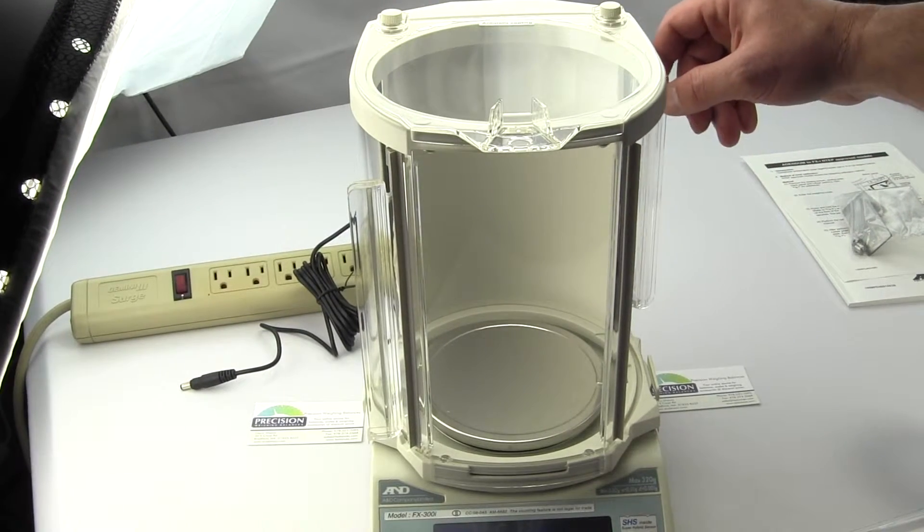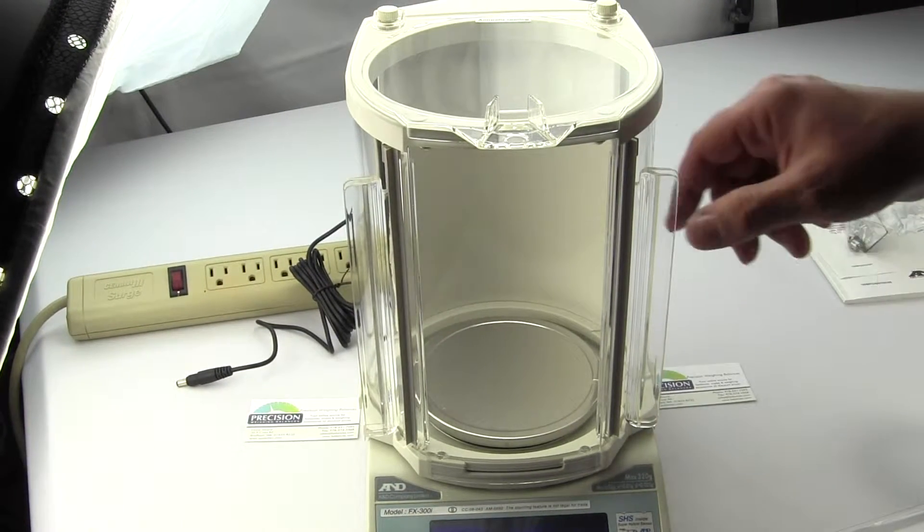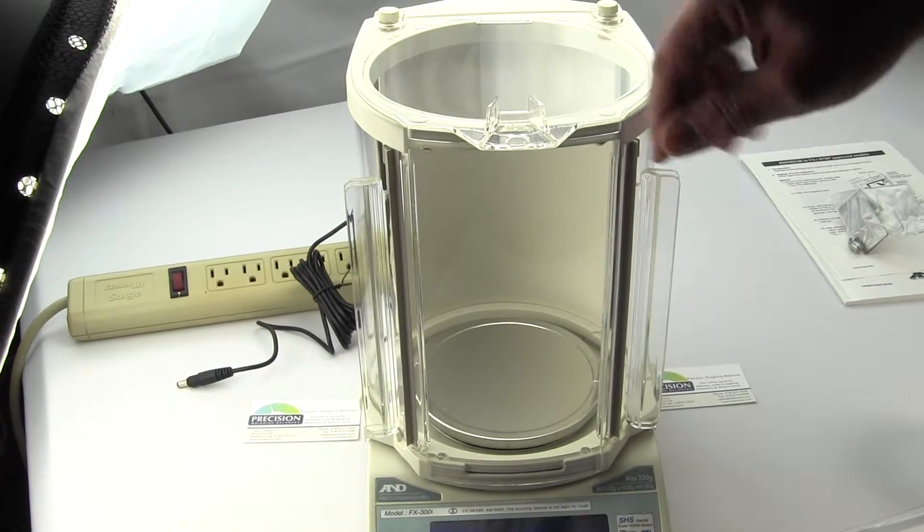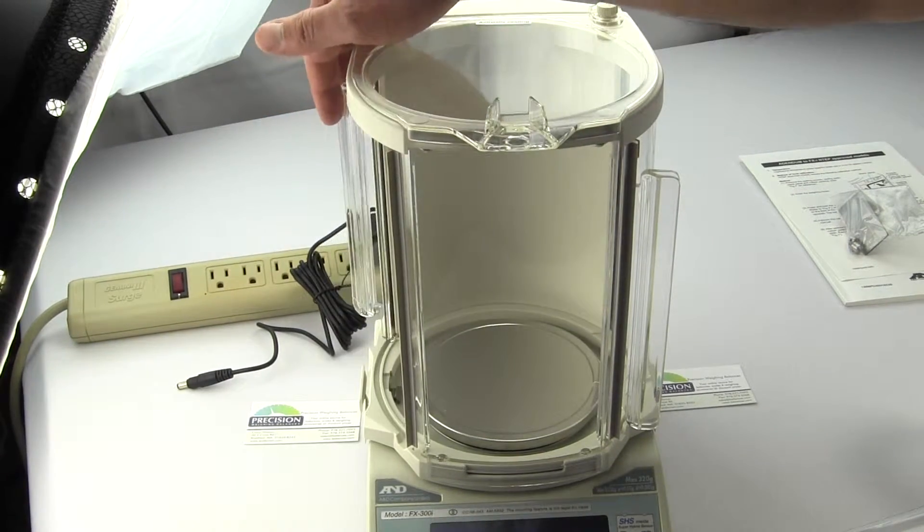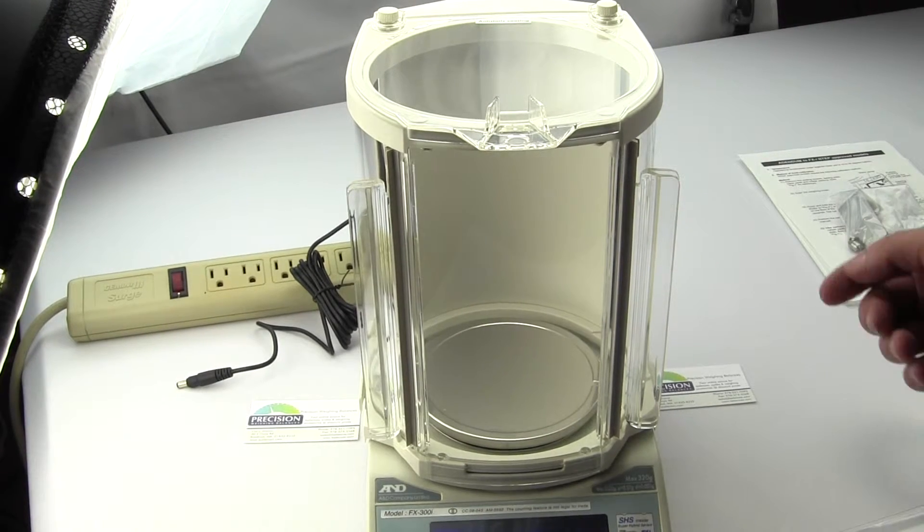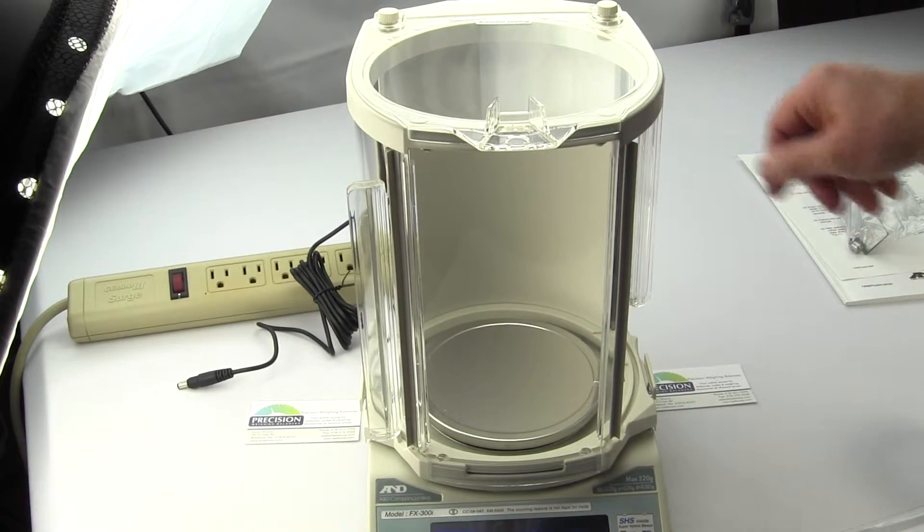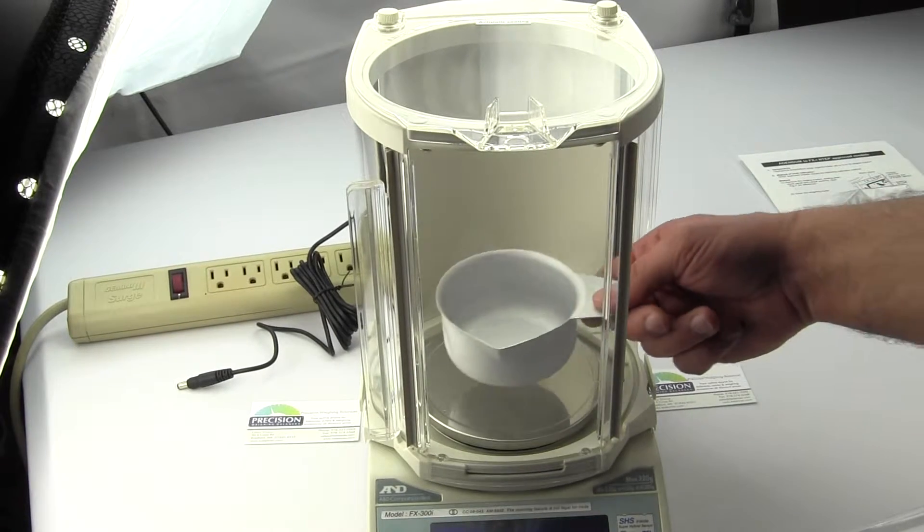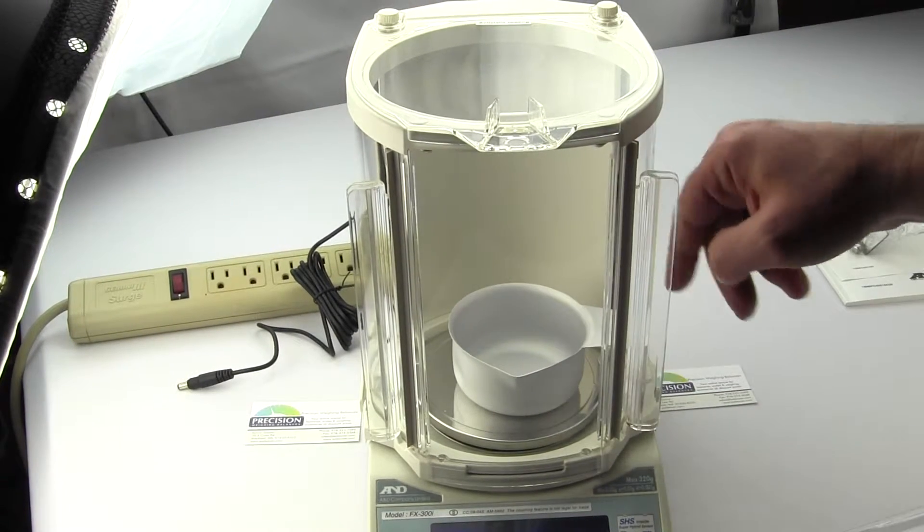You'll notice it is somewhat nicer than the shorter unit. You have two rotating doors so you can either access the balance from either the left or the right, and again you could put your pan in and close it.